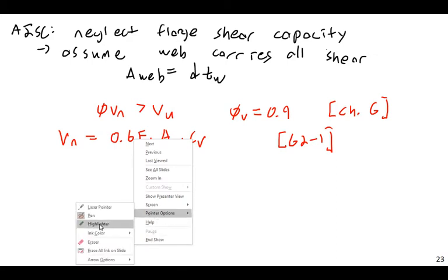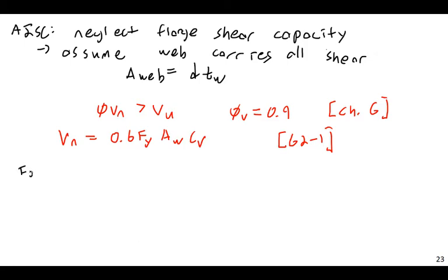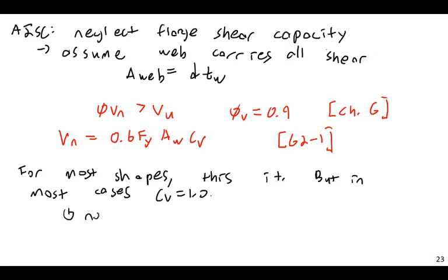The CV factor is where it gets complex. But in most cases, CV is equal to 1.0. It occurs for nearly all rolled W shapes with FY equal to 50 KSI.